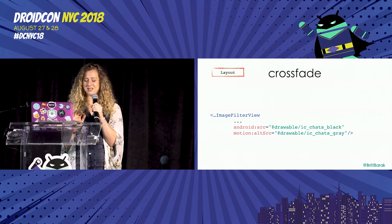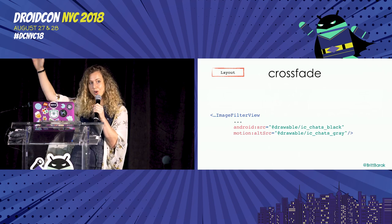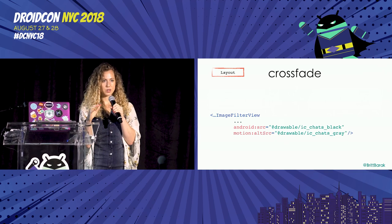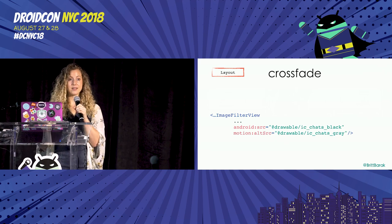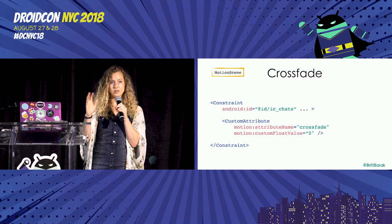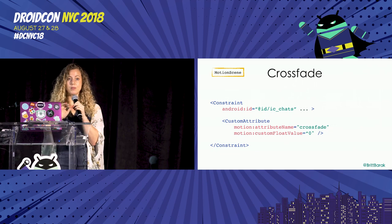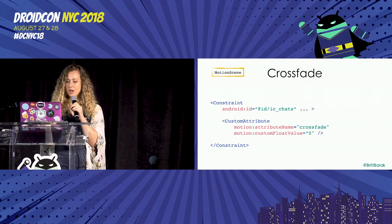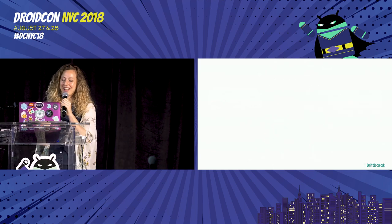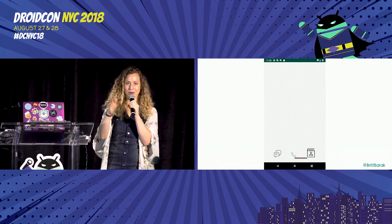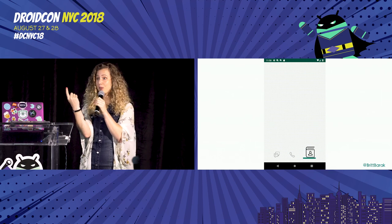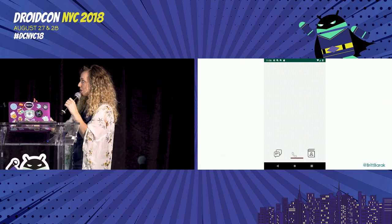For icon color, since you can't yet use a custom attribute of type drawable or color list for tinting, I used the crossfade attribute from ImageFilterView. You add a `src` for the starting image and an `altSrc` for the ending image, then add a crossfade custom attribute between 0 and 1 to define where you want to be at the beginning and end. Extremely simple.